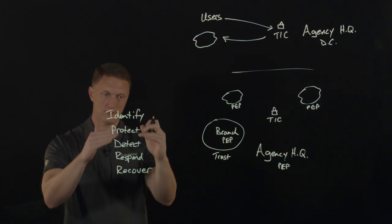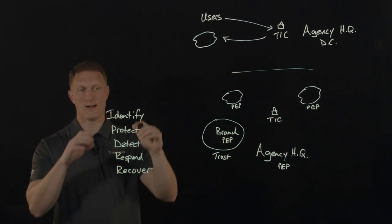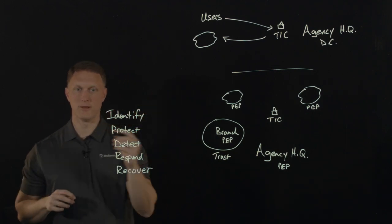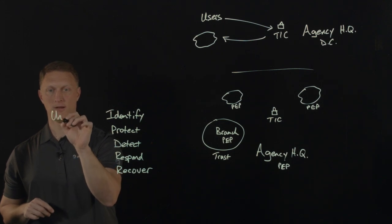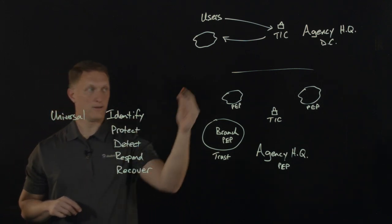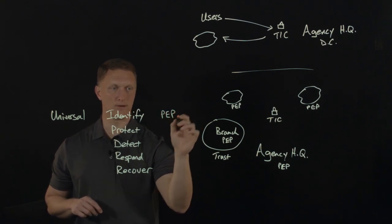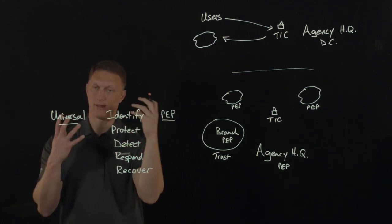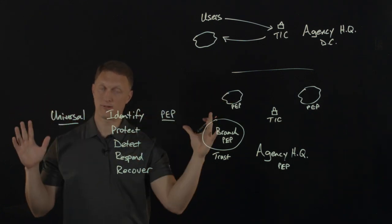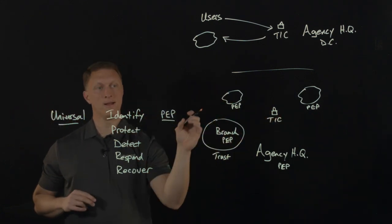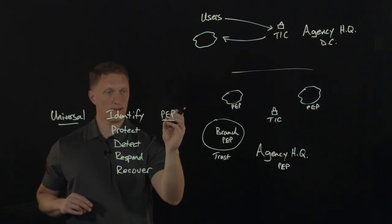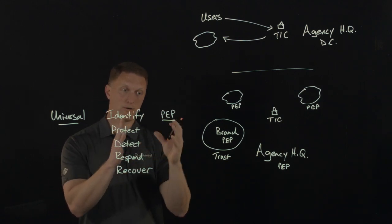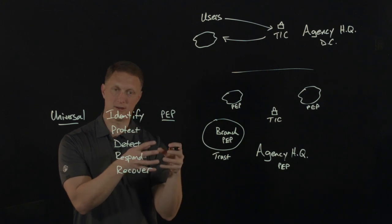And so these mappings of these five critical core functions within the TIC 3.0 documentation are then grouped into two major categories. The first is what I'll call universal. And then the other one is this policy enforcement point, PEP. From a universal perspective, there are going to be security capabilities that apply to every user, regardless of where they are. But then on the policy enforcement point locations, each of these critical capabilities are going to be mapped to a more granular, a more specific security capability.